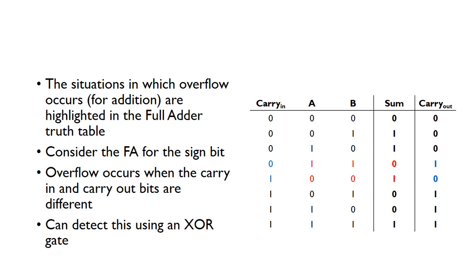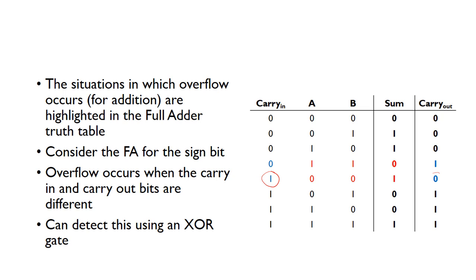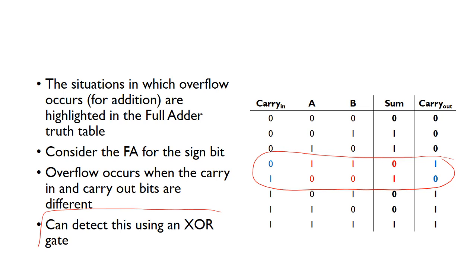Looking at these columns — this bit is the carry-in column and this is the carry-out column — we can see that overflow occurs when the carry-in and carry-out bits are different. In both cases where overflow occurs, the carry-in and carry-out are different: in one case the carry-in is zero and the carry-out is one; in the other case the carry-in is one and the carry-out is zero. So the cases in which overflow occurs are when the carry-in and carry-out bits are different.